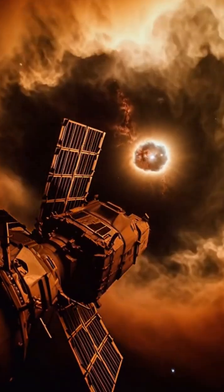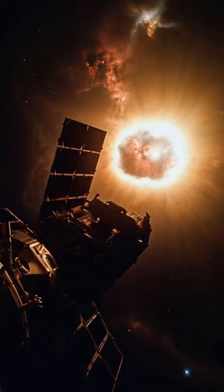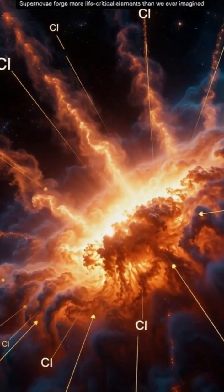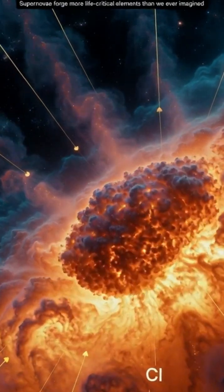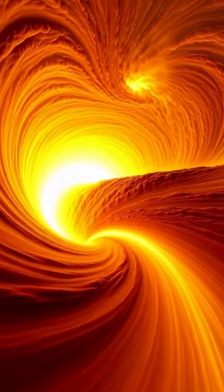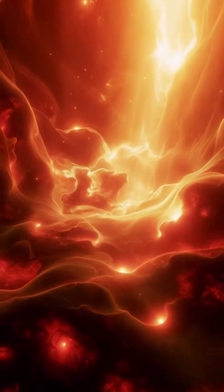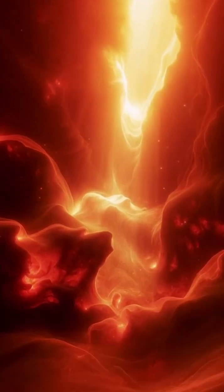showing that supernovae can forge far more of these life-critical ingredients than we ever imagined. It turns out that inside massive stars, powerful internal mixing—swirling, violent, chaotic—brews the chemistry of life long before planets even exist.